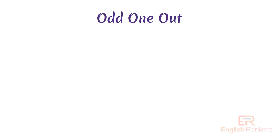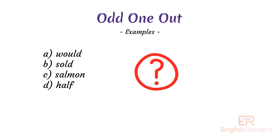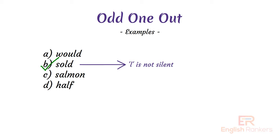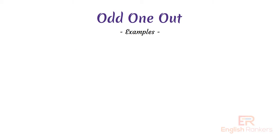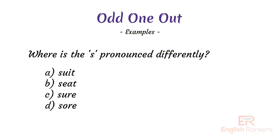Look at a few more examples: A) would, B) sold, C) salmon, D) half. Can you tell which one is the odd one out and why? The answer is sold, as the L is not silent in 'sold'. Next question: can you tell me where the S is pronounced differently?